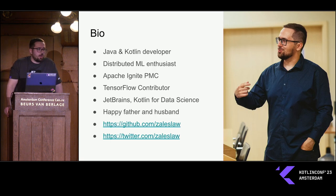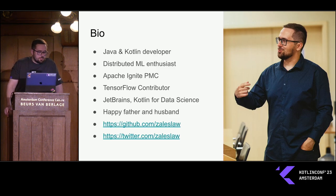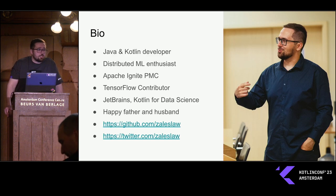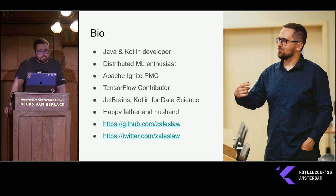I'm very interested in how to take an ML algorithm and spread it across nodes - it's a very interesting and challenging task for many classical ML algorithms. If somebody participates in Apache projects, probably you've heard of Apache Ignite, the in-memory distributed database. I was one of the authors of a distributed ML library on top of that. I also contributed a little to TensorFlow's Java API, and for the last few years I've been working in the Kotlin for Data Science team at JetBrains.